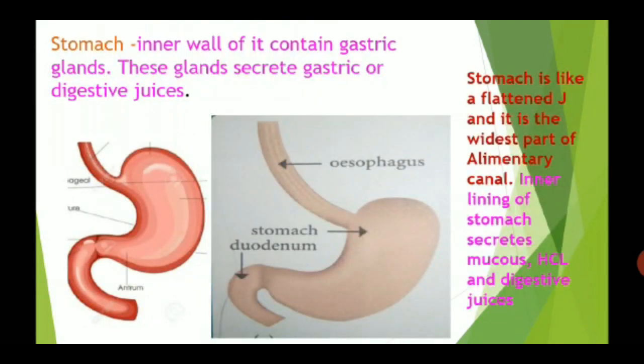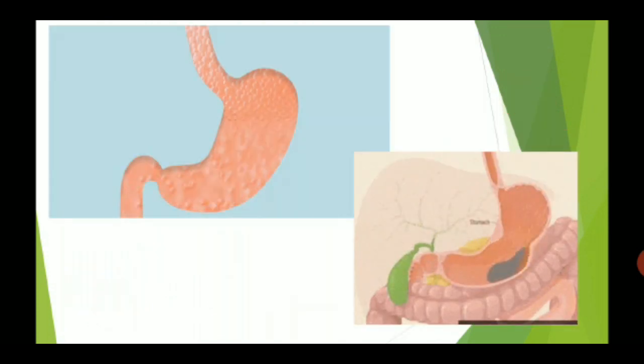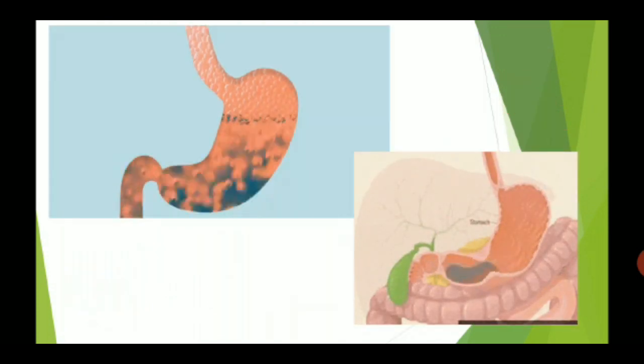The walls of the esophagus start contracting and expanding to push the food down into the stomach. The stomach is a J-shaped, bag-like structure made of muscles. It receives food from the food pipe at one end and opens into the small intestine at the other end.